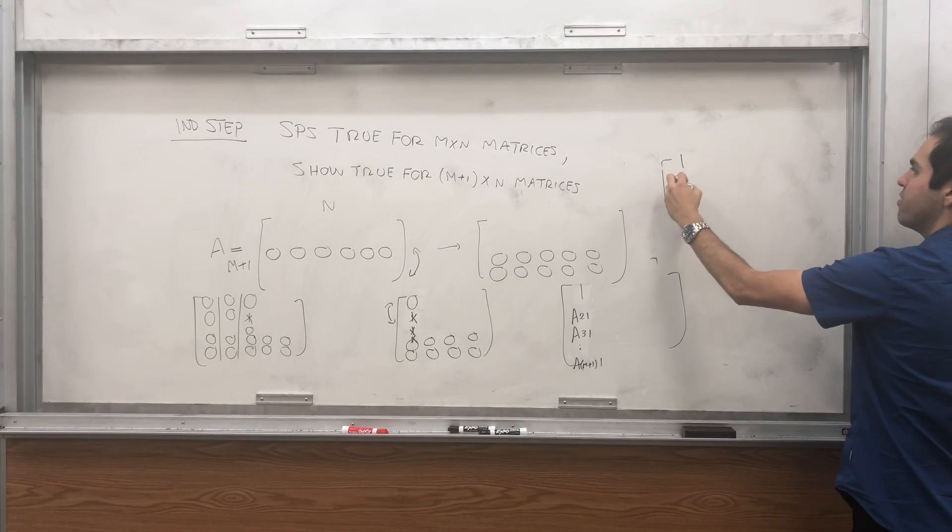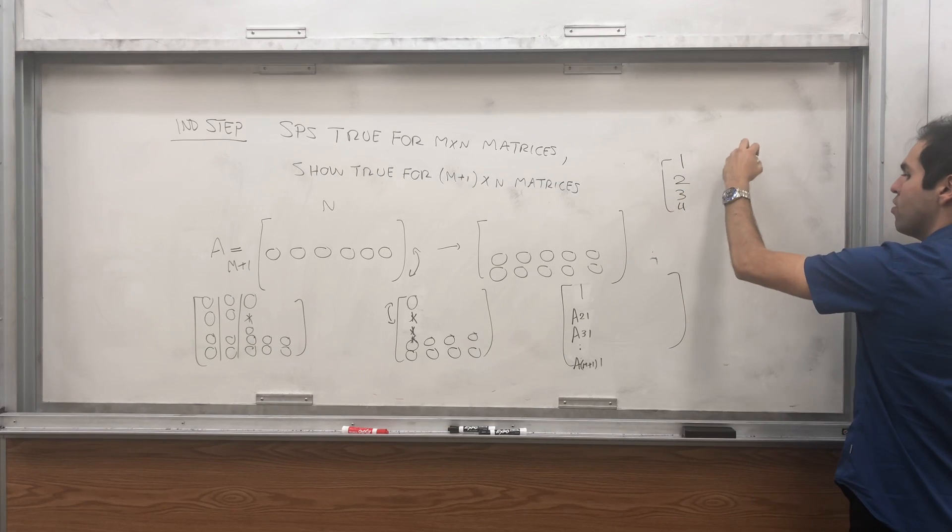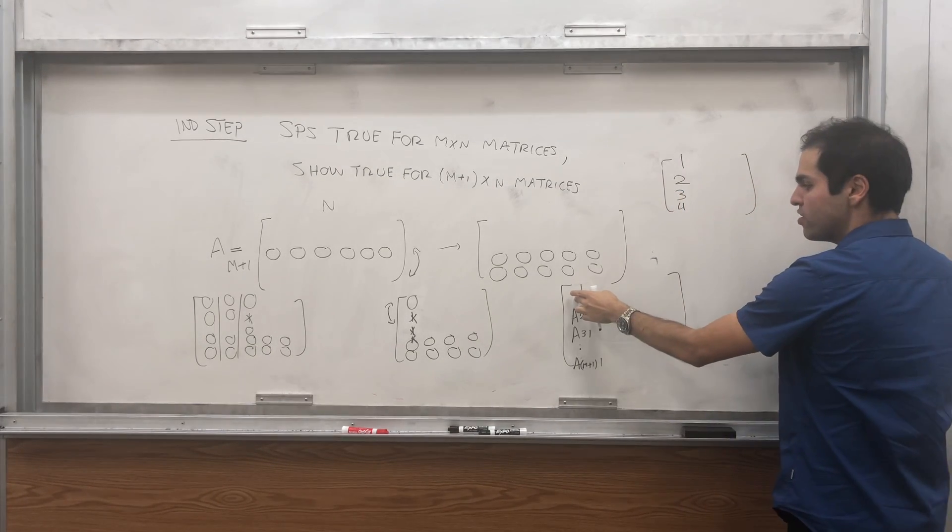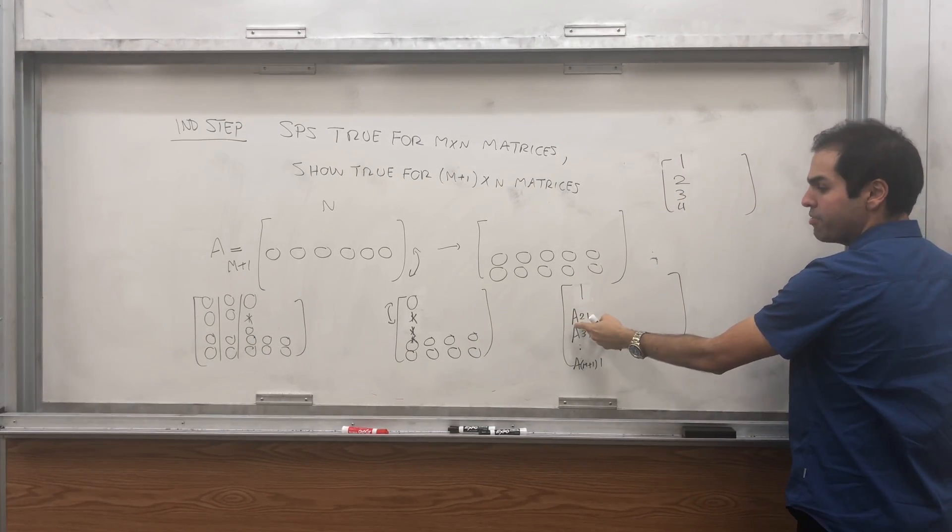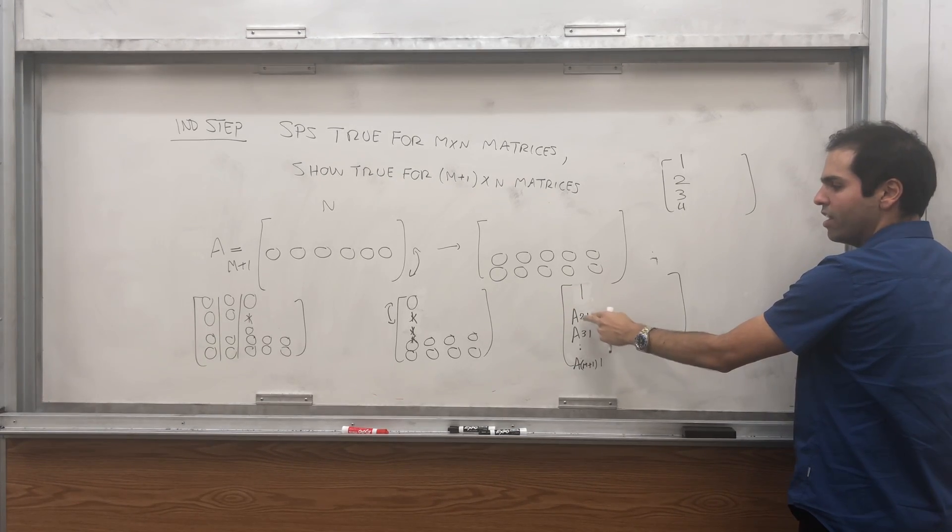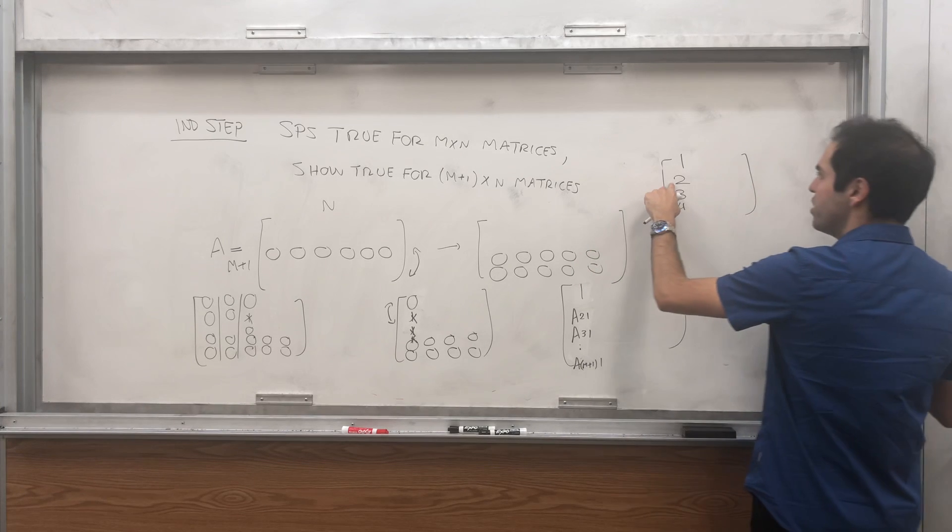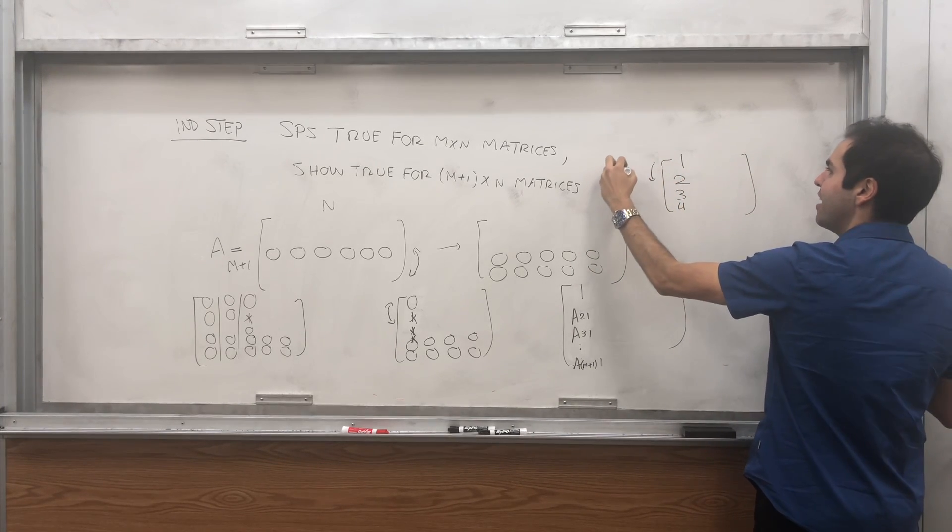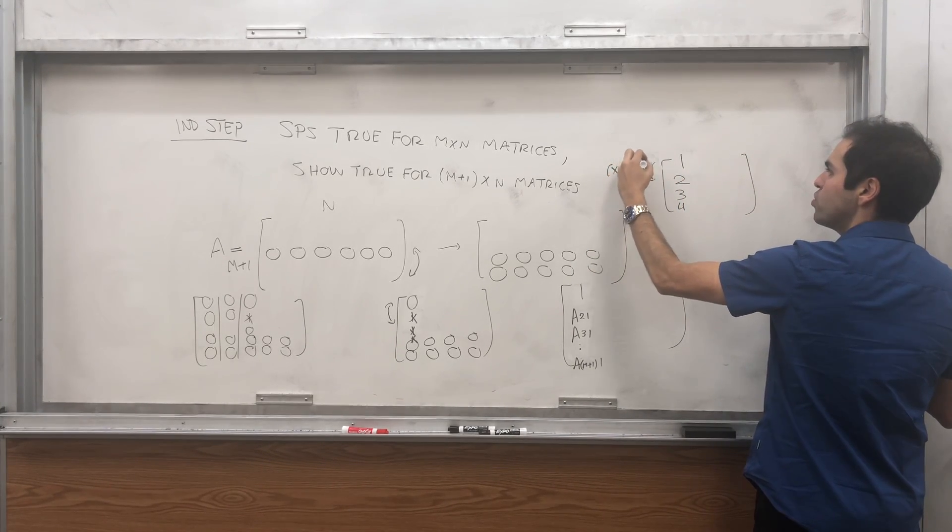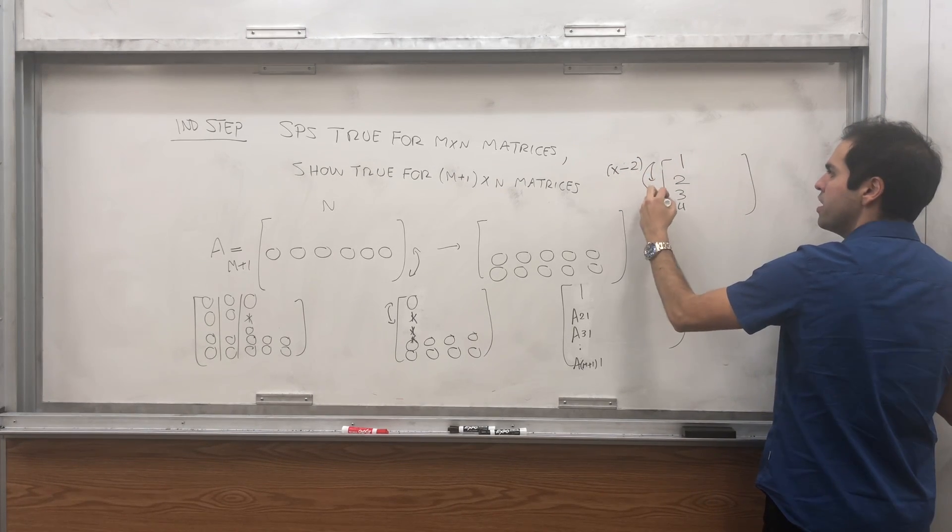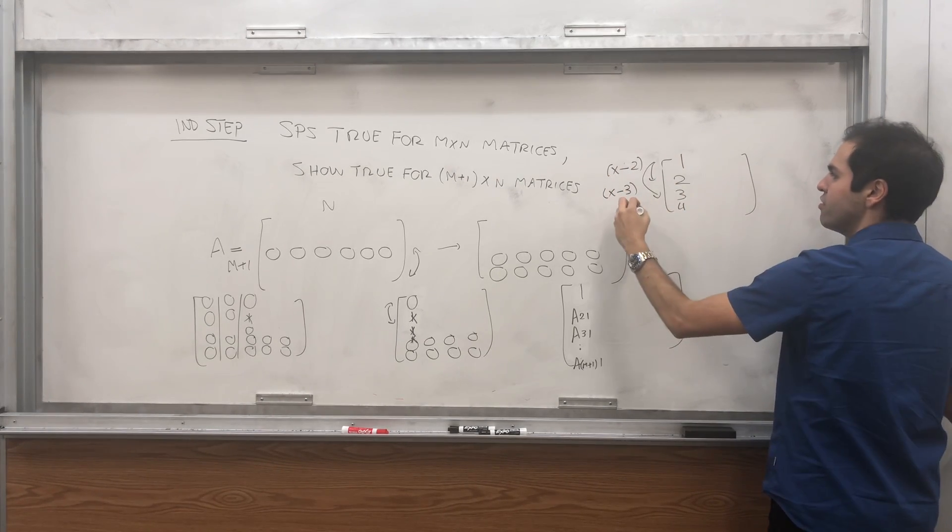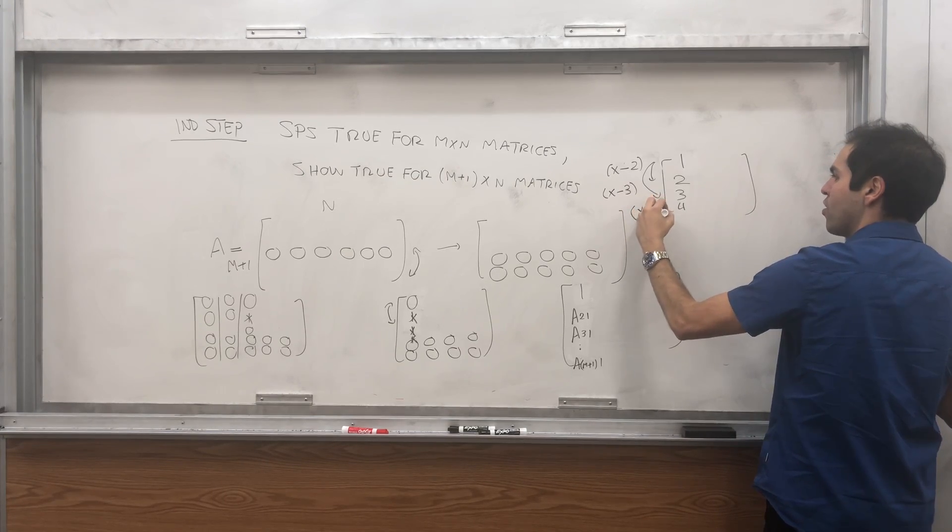So suppose for sake of simplicity, we have one, two, three, four. Then, take this row and subtract, I'm sorry, take this row and subtract a21 times the first row. So here, for example, you would subtract minus two times the first row. Here, you would subtract minus three from the first row and then minus four.